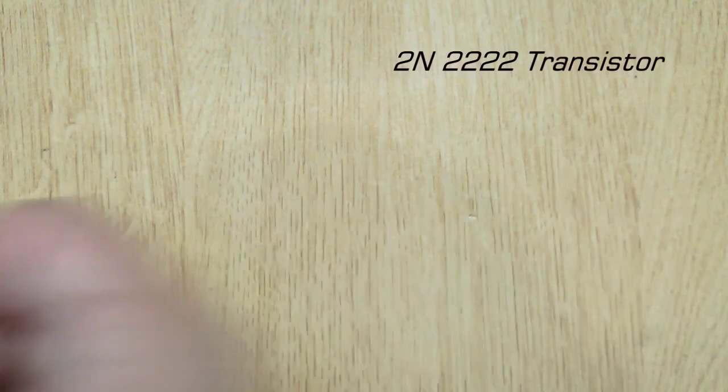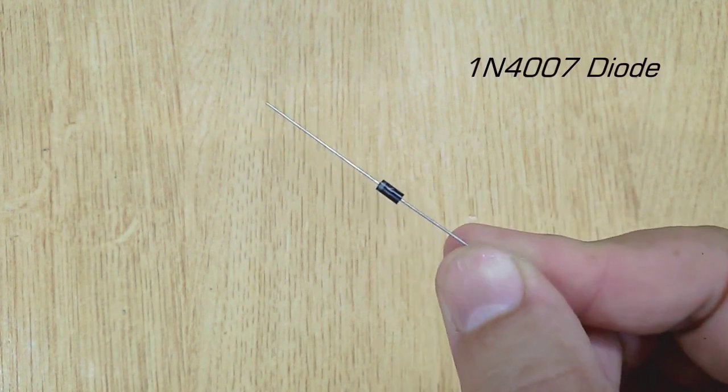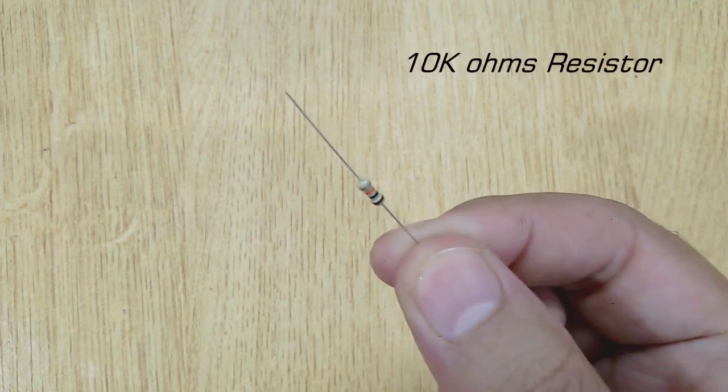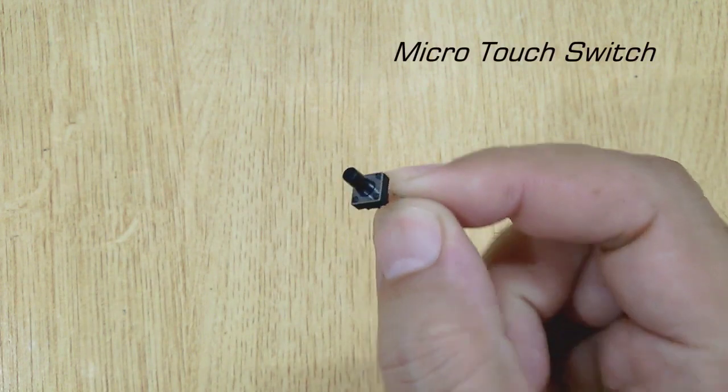You'll also need a 2N2222 transistor, 1N4007 diode, 10K ohm resistor, and micro touch switch.